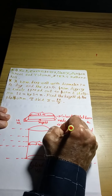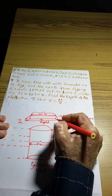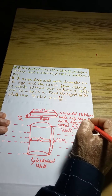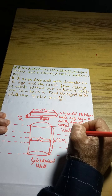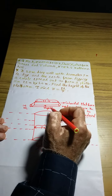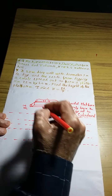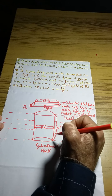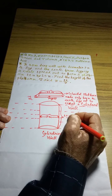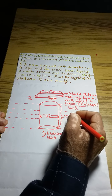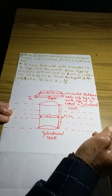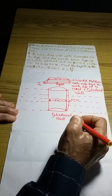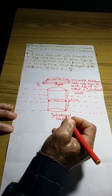This cuboidal platform is made only from the earth dug out to create the cylindrical well. So the volume of this cuboidal platform is equal to the volume of the cylindrical well, because the mass of a body is directly proportional to the volume.